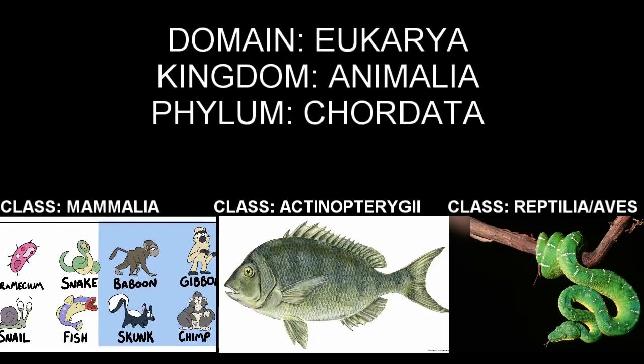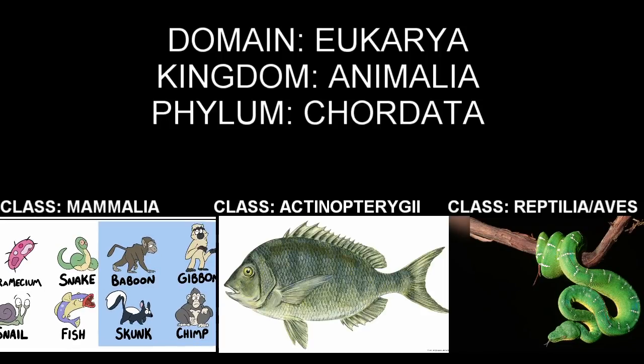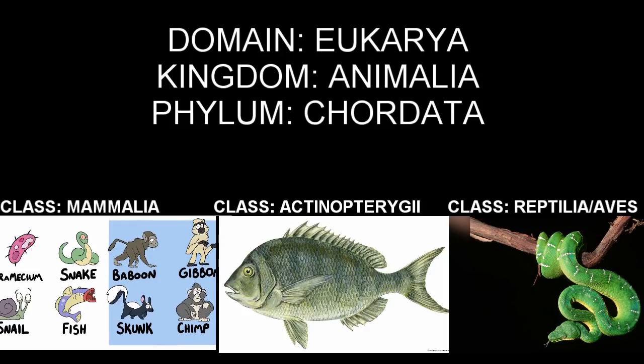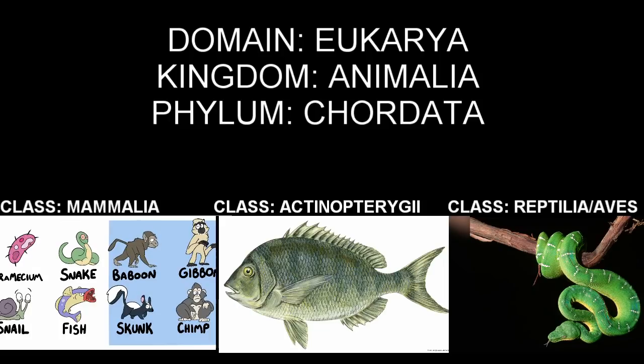Mammals, actinopterygians, and sauropsids all still have the suite of traits that necessitate them as eukaryotes, animals, and chordates. This means these animals share an incredible number of traits overall. However, at the class level, suites emerge that make each group unique from one another. This is how the further specification of organisms allows us to create the nested hierarchies.